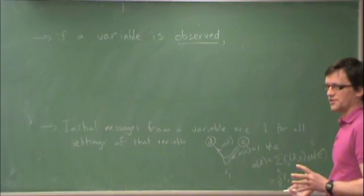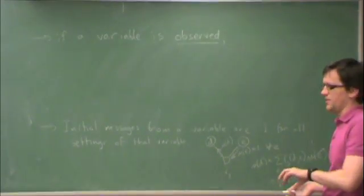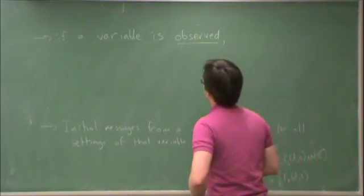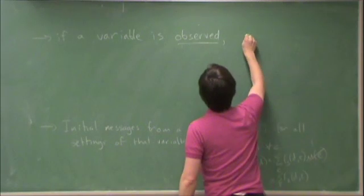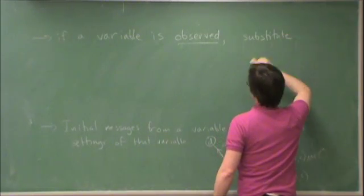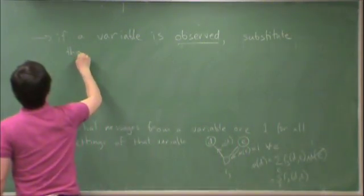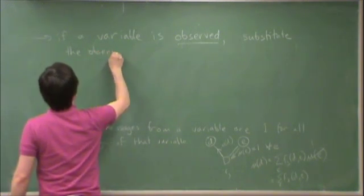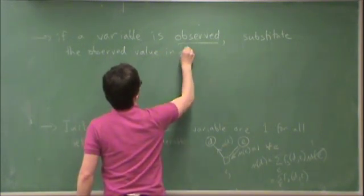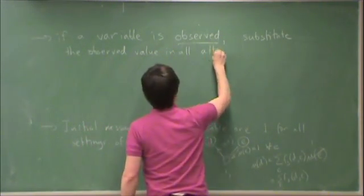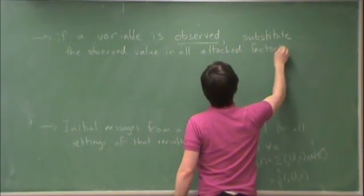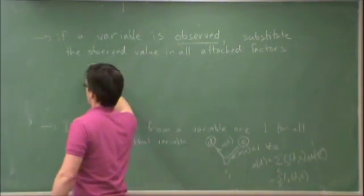But if a variable is observed, then you know the exact value that that variable takes. What you do, if a variable is observed, is substitute the observed value in all attached factors and remove the variable from the factor graph.